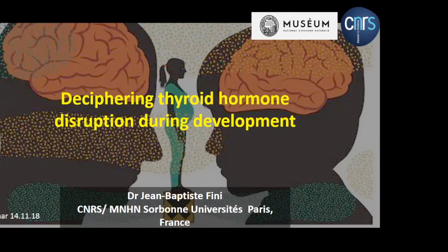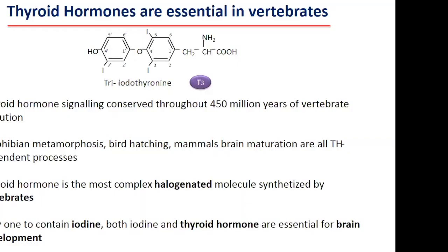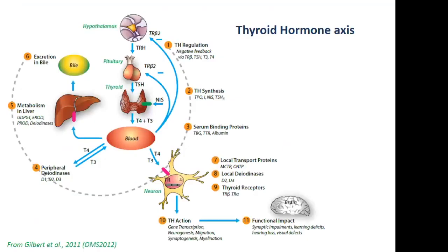This is really an honor for me to make this webinar about how we decipher thyroid hormone disruption during development. The first thing I want to stress is that thyroid hormones are essential in all vertebrates. You have the structure of the triiodothyronine, and this is the exact same hormone found across vertebrates, but also chordates. These hormones drive crucial transitions in all vertebrates — for example, amphibian metamorphosis, bird hatching, or mammal brain maturation. This is the most complex iodinated molecule synthesized by vertebrates, and the only one that contains iodine. Both iodine and thyroid hormone are essential for brain development.